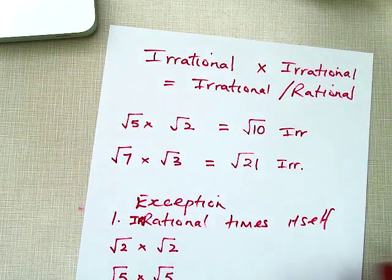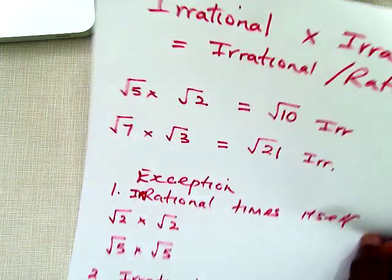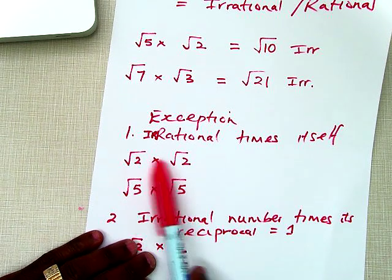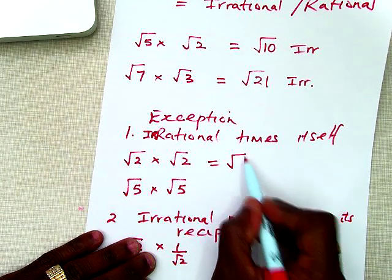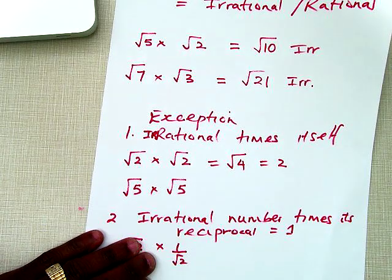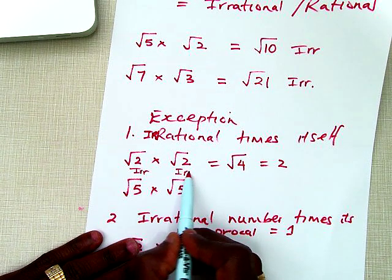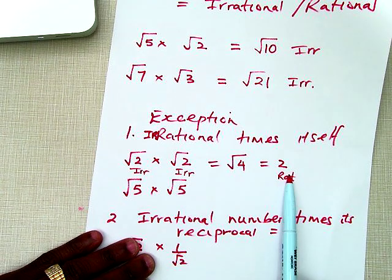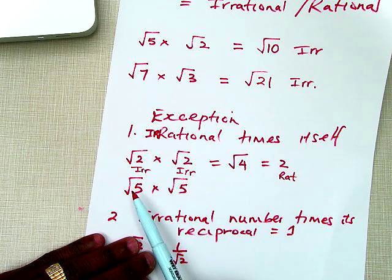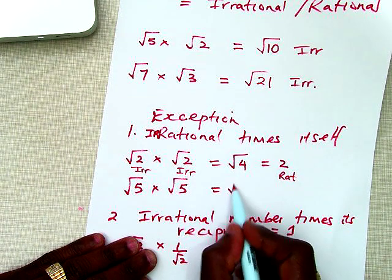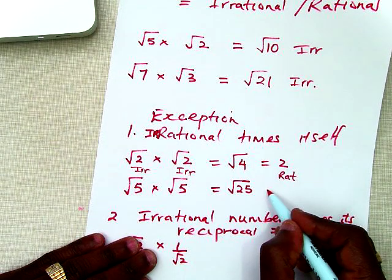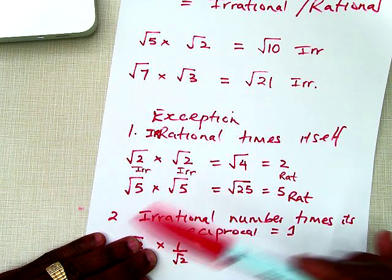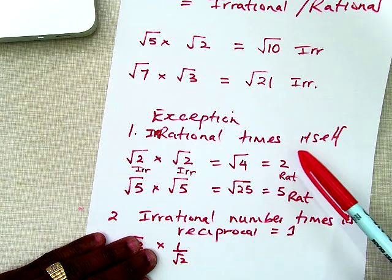The only time irrational times irrational gives you rational is when you multiply the number by itself or by its reciprocal. For example, square root of 2 times square root of 2 gives the square root of 4, which equals 2 — a rational number. Similarly, square root of 5 times square root of 5 gives square root of 25, a perfect square equal to 5, which is rational. If you take any square root that's irrational and square it, you get a perfect square, making it rational.